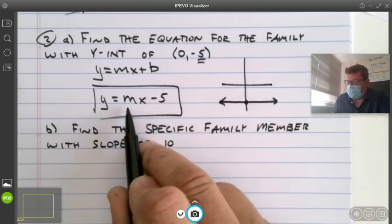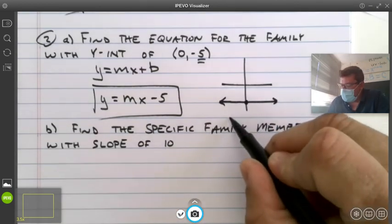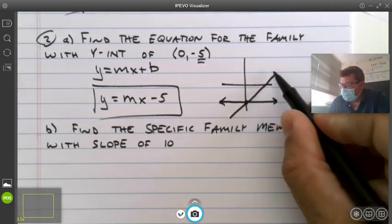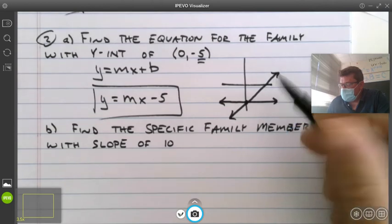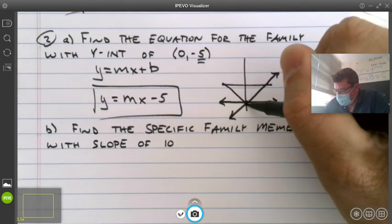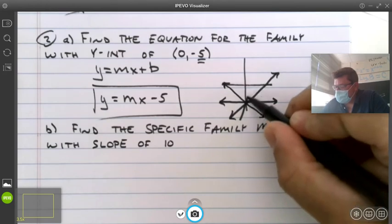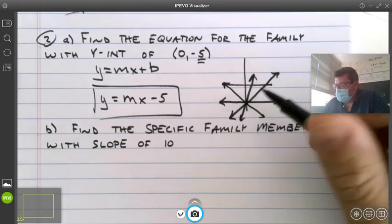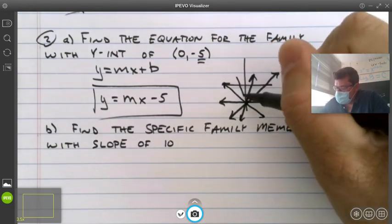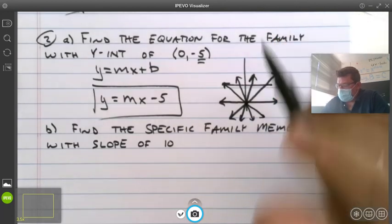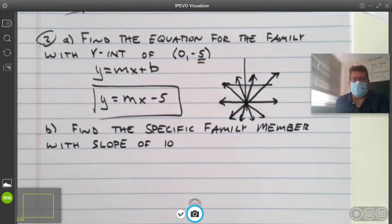What if the slope was one? Throw that in there. That is a diagonal line, 45 degree angle, negative one, two, negative two. So what do you think that looks like?